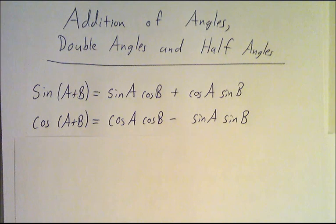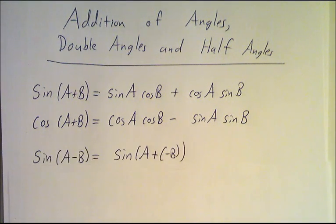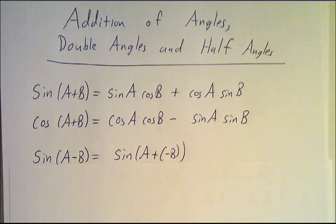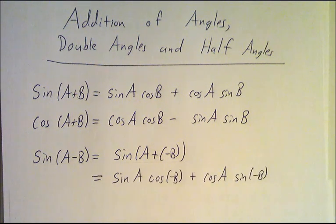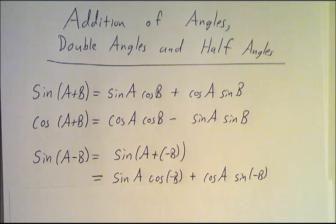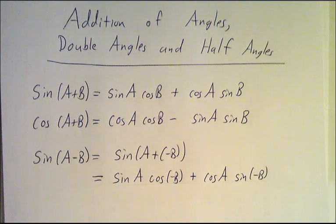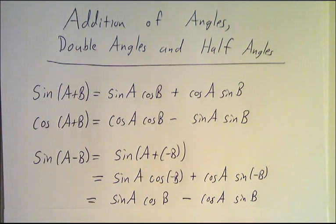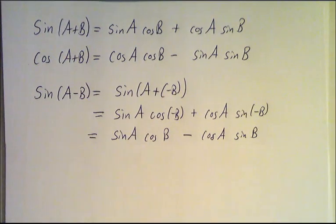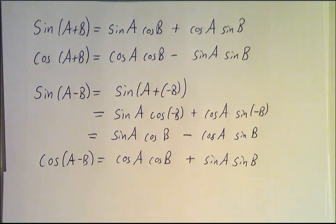And the cosine of the sum of two angles. If you know the sine and cosine of the sum of two angles, you can also get the sine of the difference of two angles, because sine of a minus b is just sine of a plus negative b. Using the sum formula, we get sine(a)cos(-b) + cos(a)sin(-b). Since cosine is even, cos(-b) = cos(b), and since sine is odd, sin(-b) = -sin(b). So we get the formulas for the sine of a sum, cosine of a sum, sine of a difference, and likewise the cosine of a difference.